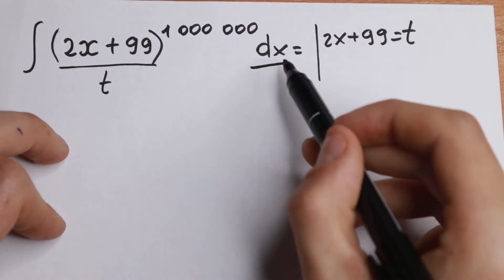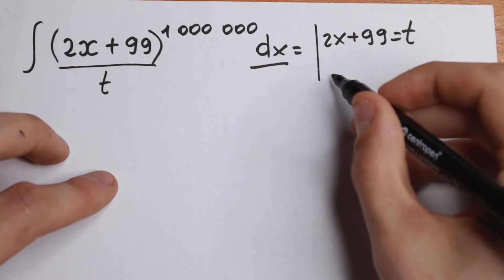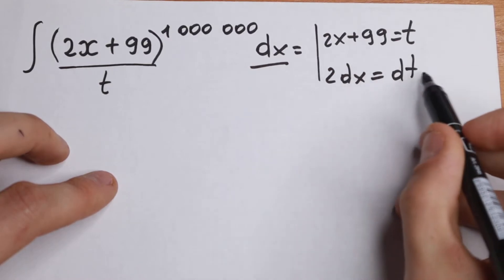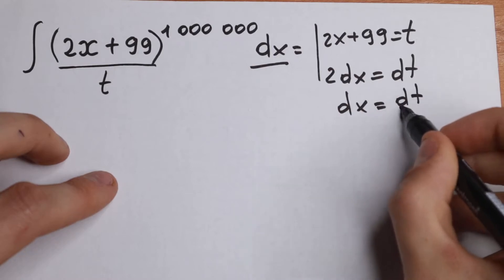But we have dx, we need to change it because we're using dt right now. So we need to find the derivative from both sides. We will have that 2 dx equals dt. And if we divide both sides by 2, we will have that our dx equals dt over 2.